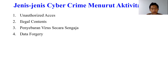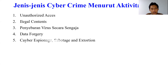Jenis yang keempat yaitu data forgery, yaitu kejahatan yang dilakukan dengan tujuan memasukkan data pada dokumen-dokumen penting yang ada di internet, biasanya dimiliki oleh institusi atau lembaga yang memiliki situs berbasis web database. Kemudian jenis yang kelima yaitu cyber espionage, atau sabotage and extortion. Cyber espionage merupakan kejahatan yang memanfaatkan jaringan internet untuk melakukan kegiatan mata-mata terhadap pihak lain dengan memasuki sistem jaringan komputer pihak sasaran.